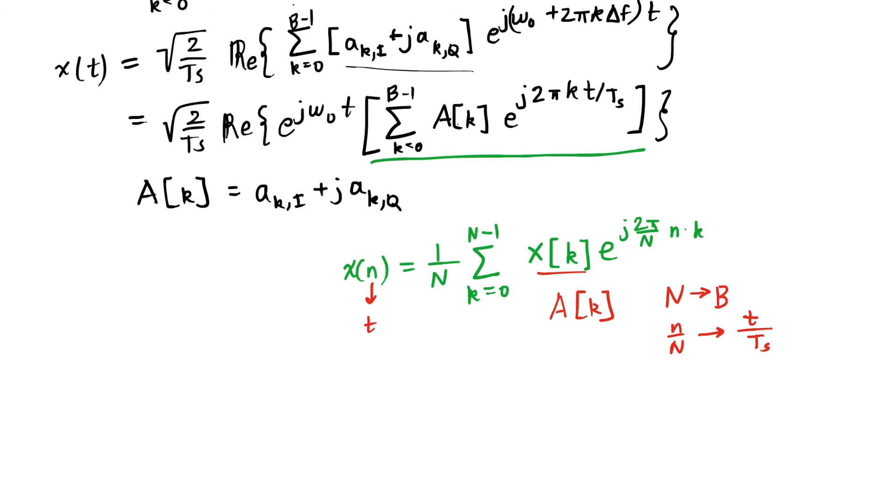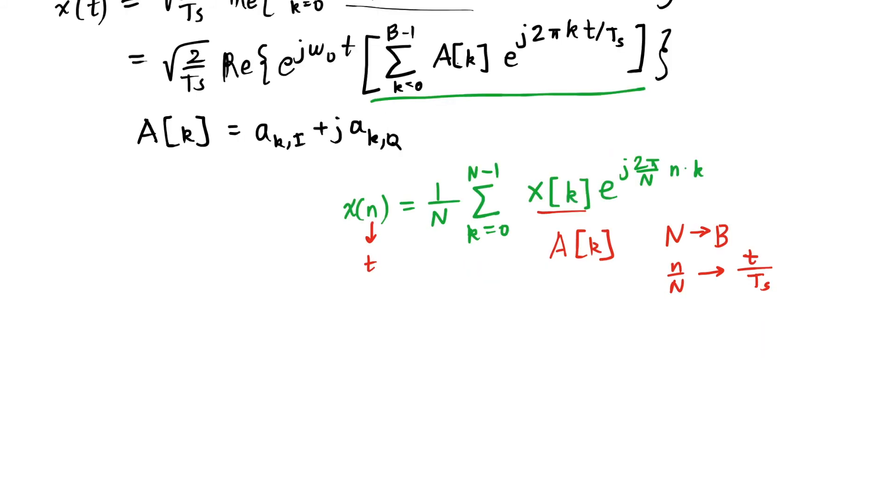So what we end up with is a complex baseband signal that can be calculated from the inverse discrete Fourier transform. Okay, so that would mean that at the receiver, we could use the discrete Fourier transform to undo this inverse DFT operation and give us the amplitudes that we want to know that contained our data.